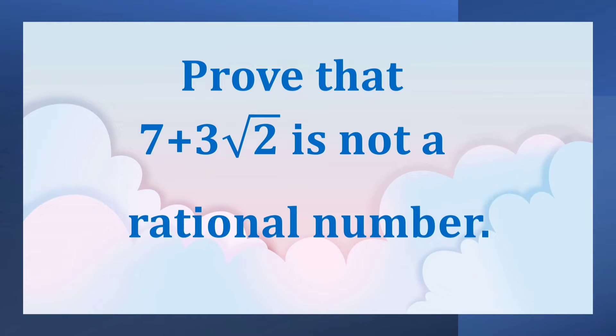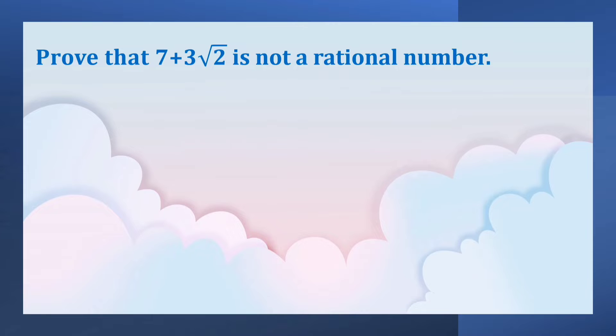Prove that 7 plus 3 root 2 is not a rational number. Let us assume, to the contrary, that 7 plus 3 root 2 is rational.